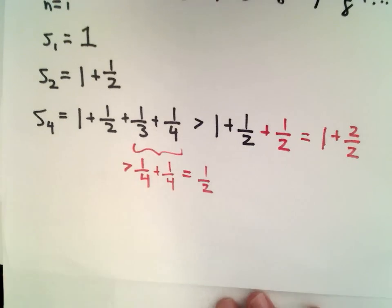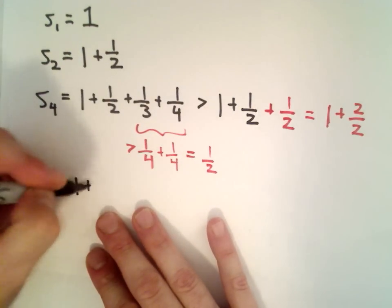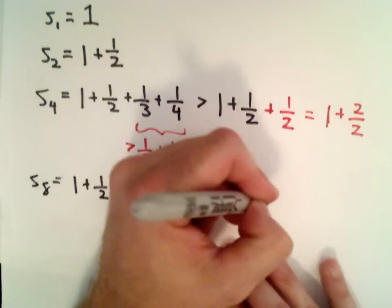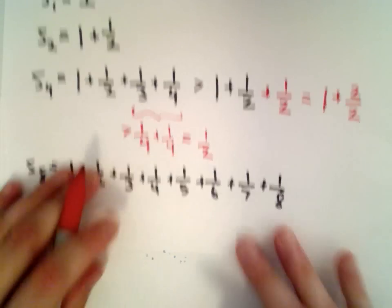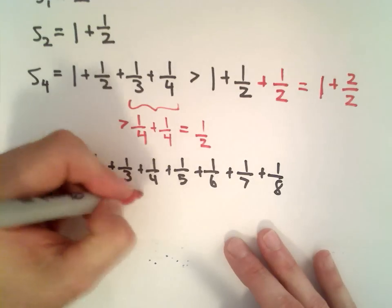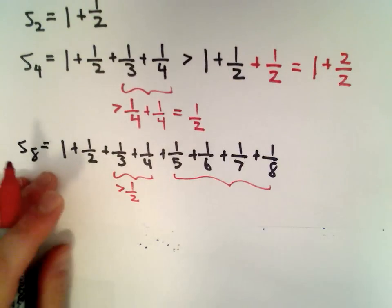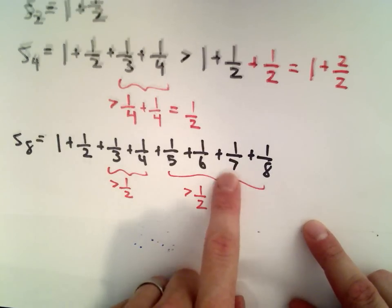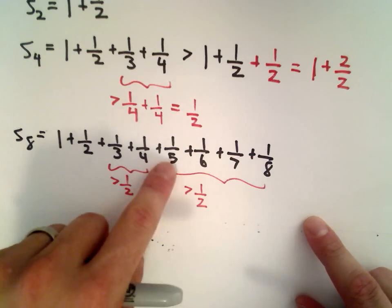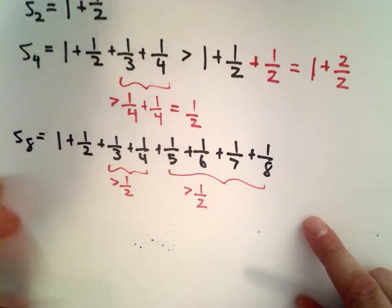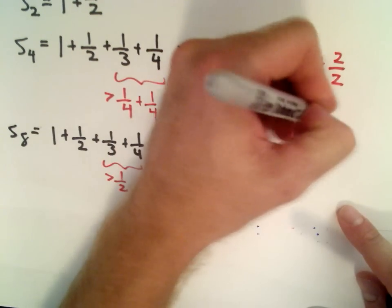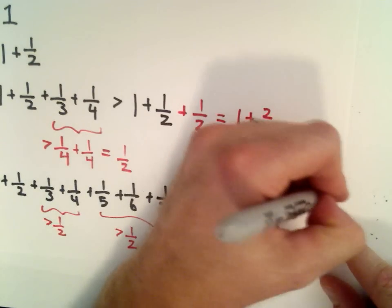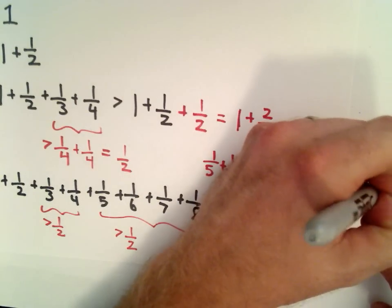Now we're going to do the same thing, but go out to the first eight terms. We've got 1 plus 1 half plus 1 third plus 1 fourth plus 1 fifth plus 1 over 6 plus 1 over 7 plus 1 over 8. We already argued that 1 third plus 1 fourth is bigger than 1 half. If you look at the last four terms, that's also larger than 1 half, because 1 fifth is greater than 1 eighth, 1 sixth is greater than 1 eighth, 1 over 7 is greater than 1 over 8. Those last four terms are larger than 1 over 8 plus 1 over 8 plus 1 over 8 plus 1 over 8, which gives you 4 over 8, or 1 half.